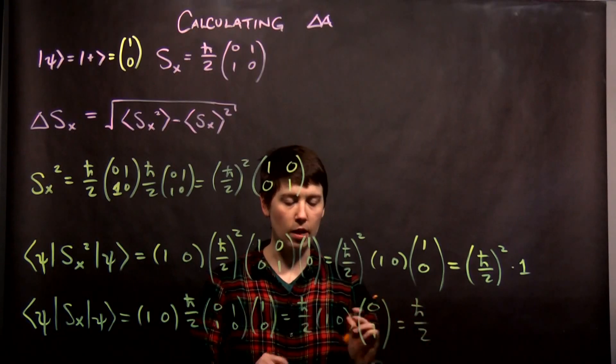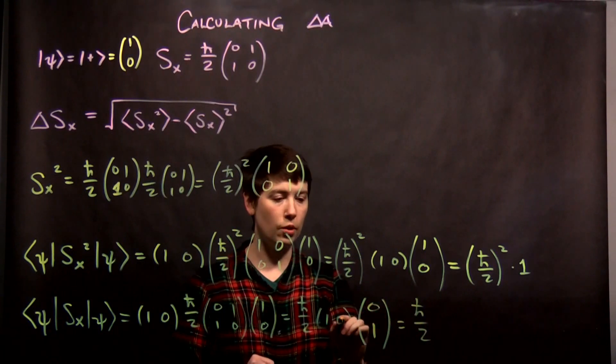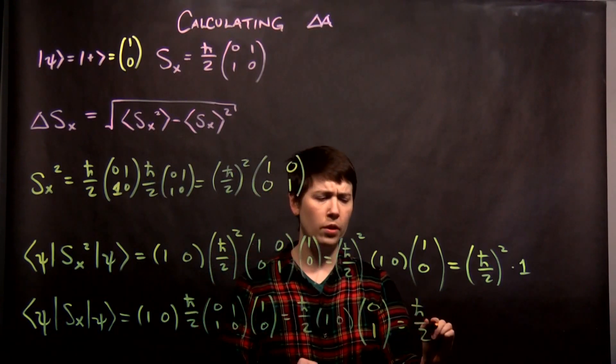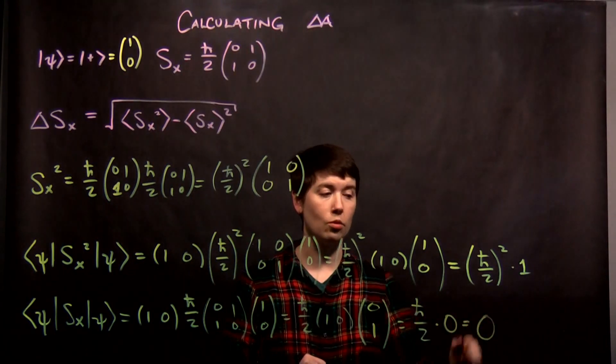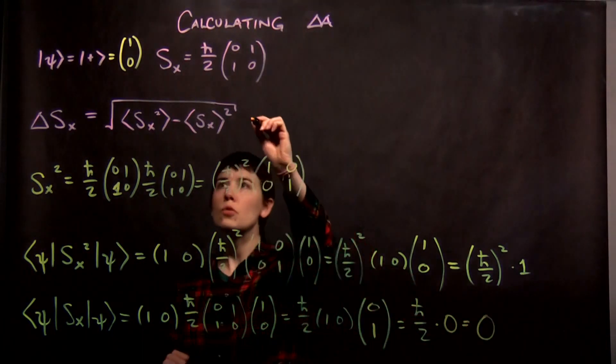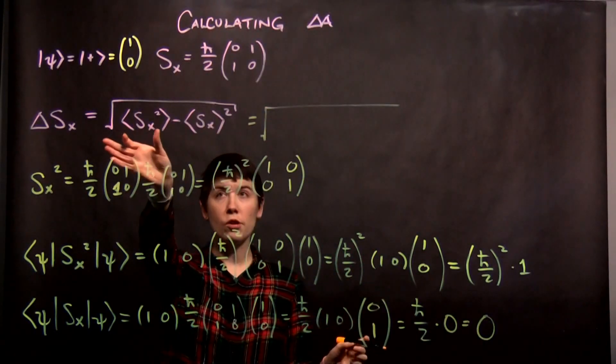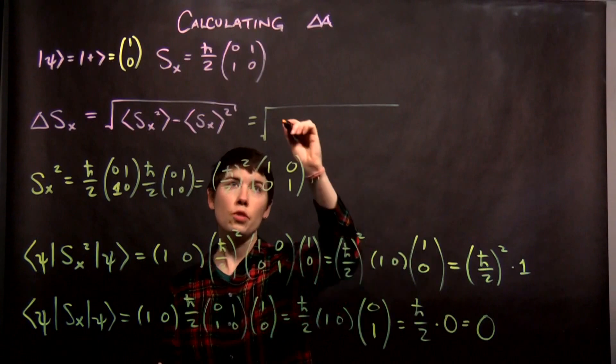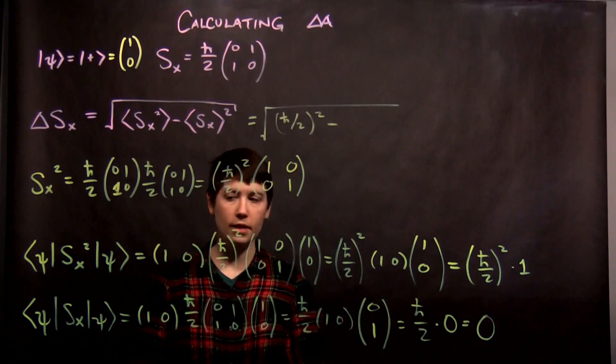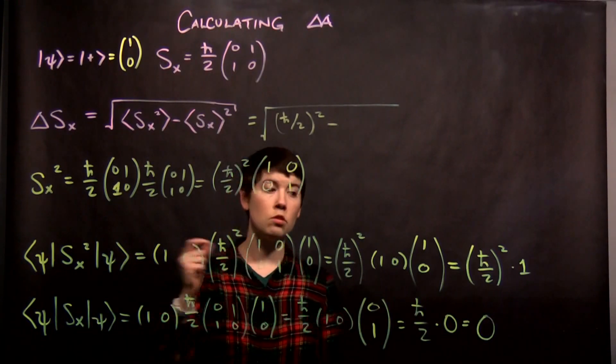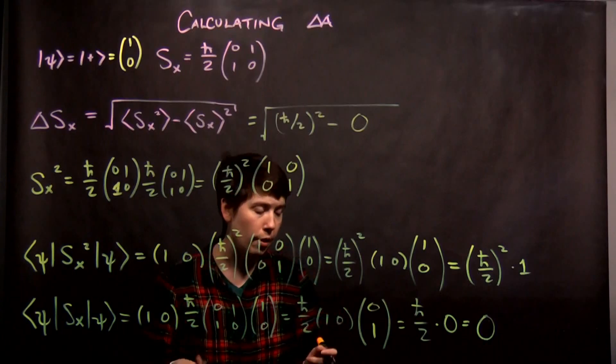So again, I now just have a row times a column. And so 1 times 0 is 0. 0 times 1 is also 0. This actually gives me times 0. So this actually equals 0. So when we come up here, we now have two scalars. The first one is already the expectation value. So that is h-bar over 2 squared. And now I'm subtracting the expectation value squared. We've seen that the expectation value is 0. If you square 0, you still have 0.